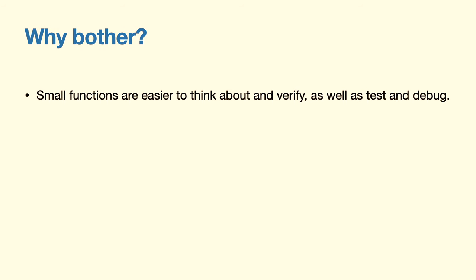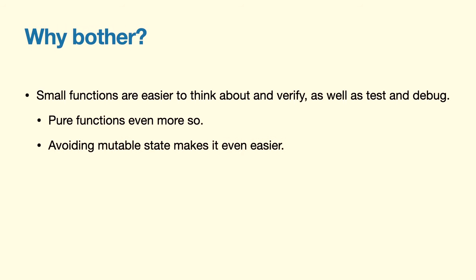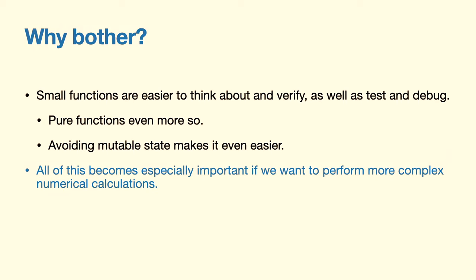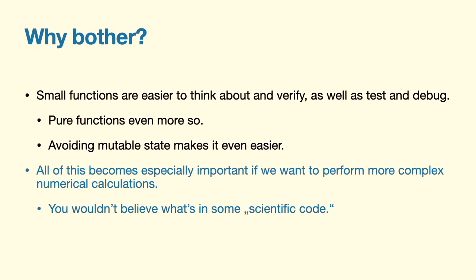Why bother in the context of FP about all of that? Obviously, small functions are easier to think about and verify. If we want to do some testing or debugging, shorter functions make that easier. Pure functions allow you to look at them in isolation and not hurt your head thinking about what happens at any other point in your codebase. Avoiding mutable state makes it even easier. This all becomes especially important when we think about complex numerical calculations — like having a bunch of numbers and performing multiple different transformations. Having pure functions strung together is way more easy to verify than having a bunch of loops doing weird stuff with many different variables.